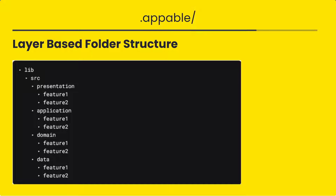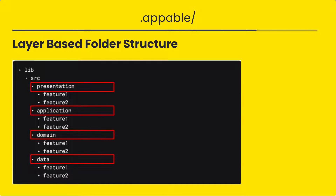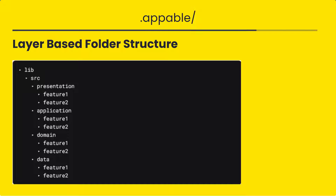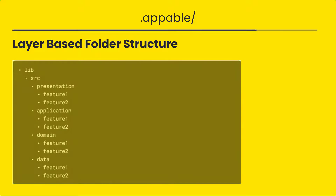The first approach is the layer-based, or 'features inside layers' structure. As the name suggests, the layers come first and your app features go inside them. We don't put dart files directly inside the layers — we create folders inside each layer. For example, controllers and widgets go inside the presentation layer, model classes inside the domain layer, and so on. As you can see on screen, inside the lib folder we have presentation, application, domain, and data as the four top layers, with features nested inside each.